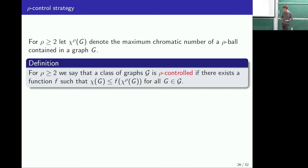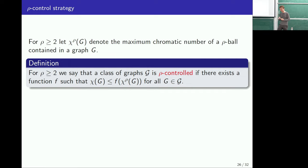I want to talk about a way of getting more out of this method using the notion of row control. If you think about what chi-boundedness is really saying: if your class is chi-bounded, then huge chromatic number is really due to an extremely local property of the graph — somewhere you can find a big clique. Rather than going straight for this very local property, you could start with something easier and build down from there. This is what the notion of row control is meant to capture.